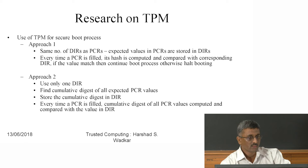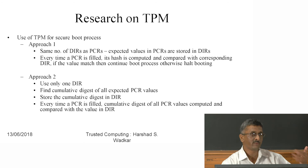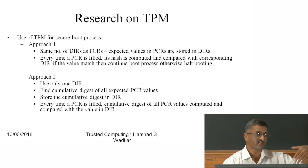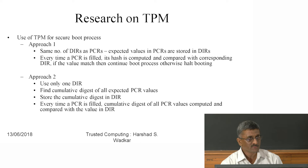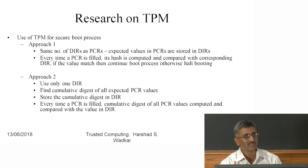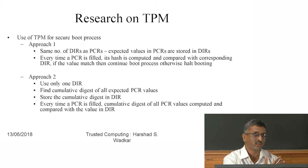Research areas in TPM: there are 24 PCRs, with about 7 available for applications. Approach one: same number of DIRs as PCRs — expected PCR values are stored in DIRs, and each time a PCR is filled, its hash is compared with the corresponding DIR. Approach two: use only one DIR — find the cumulative digest of all expected PCRs and store it in one DIR, reducing storage requirements significantly.